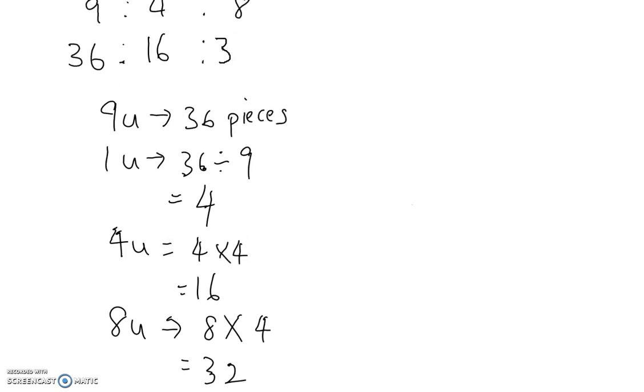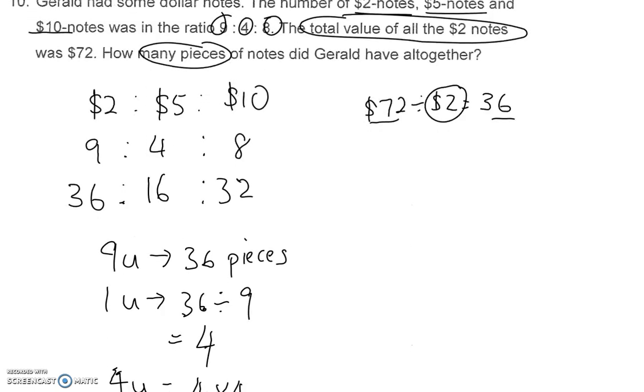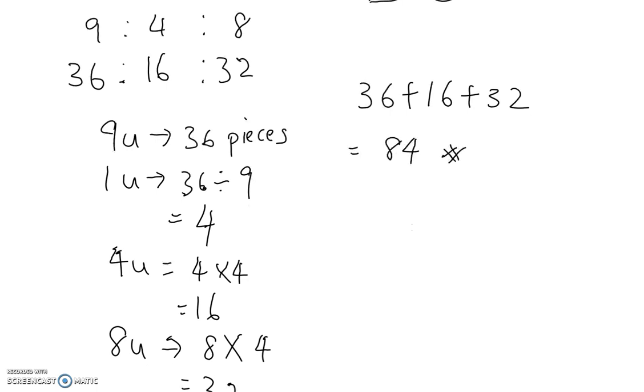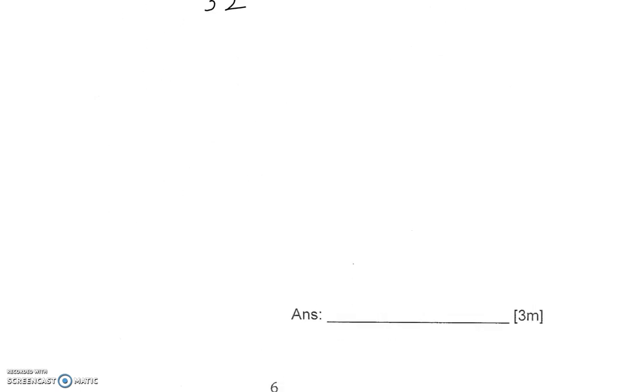So over here, 32. All right, how many pieces of notes did Gerald have all together? We will have 36 plus 16 plus 32 pieces. So all together, that gives us a total of 84 as the answer. All right, 84.